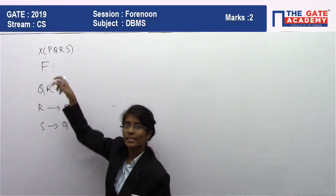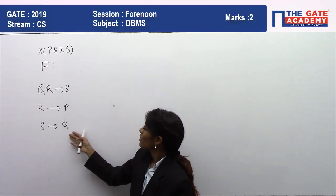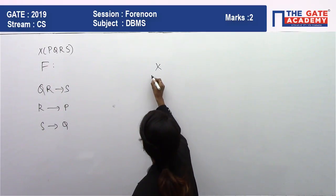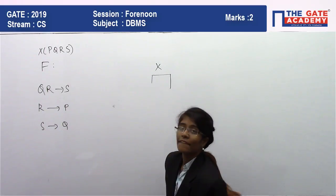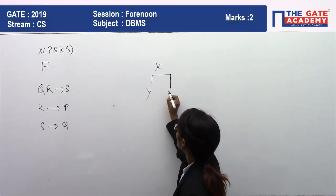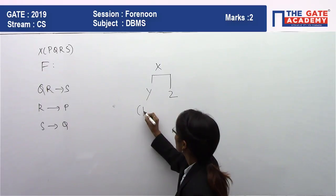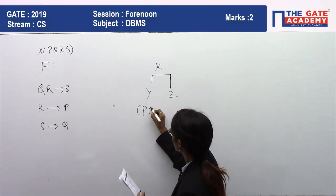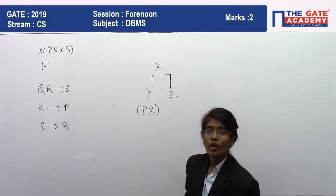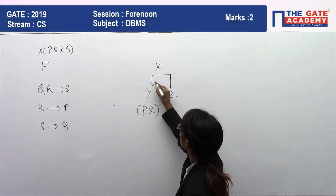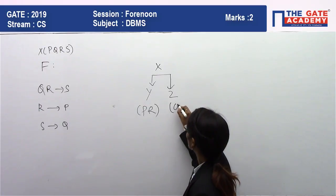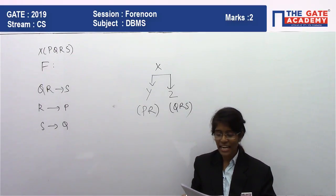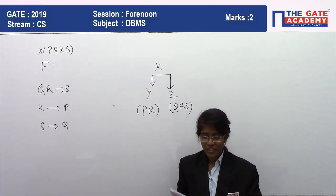So the relational schema X has columns P, Q, R, S with the given functional dependencies. X is decomposed into Y and Z, where Y has columns PR and Z has columns QRS.